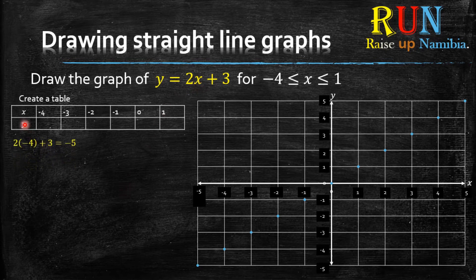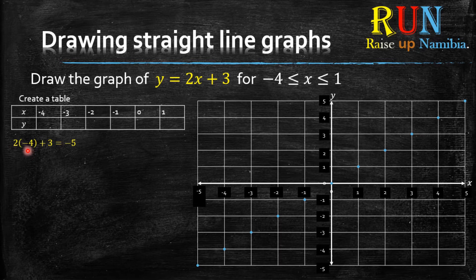For the first column, our x value is negative 4. So if we take 2x plus 3 and we substitute x with negative 4, what answer do we get? Here it is: 2 multiplied by negative 4, plus 3. Type it into your calculator and you get negative 5. That negative 5 is your y value.